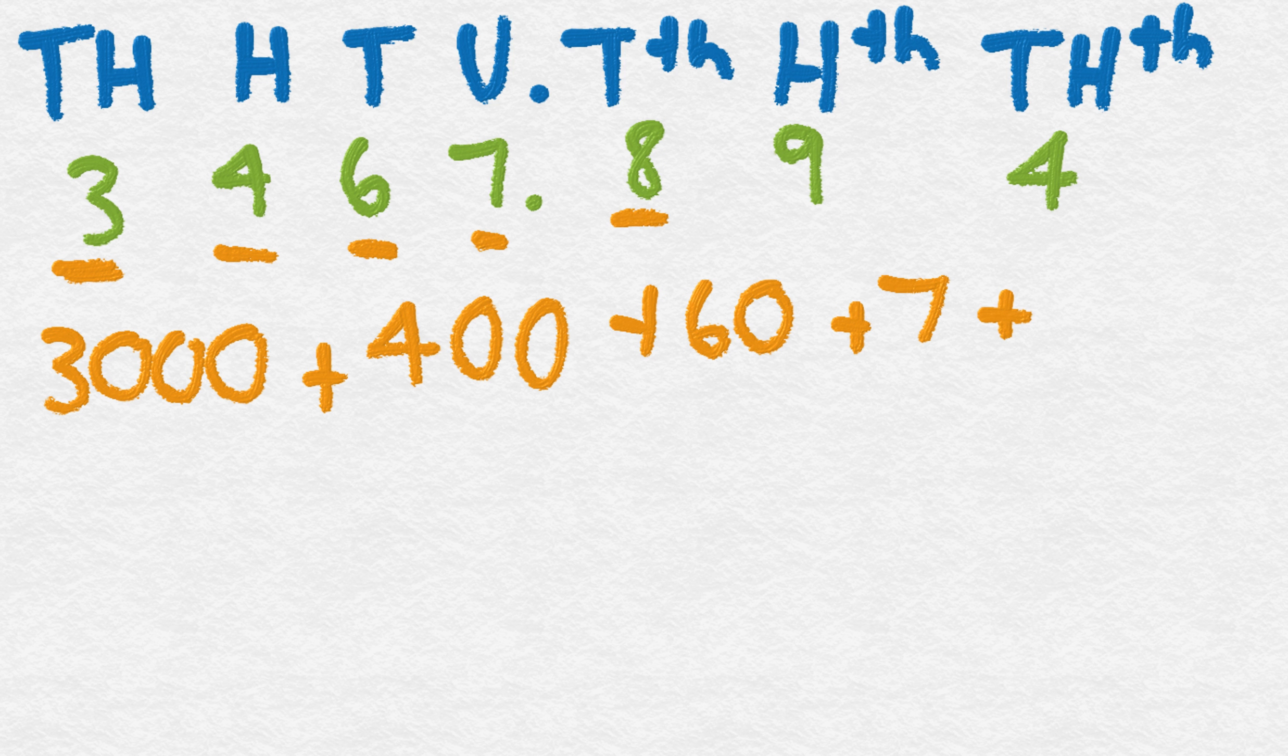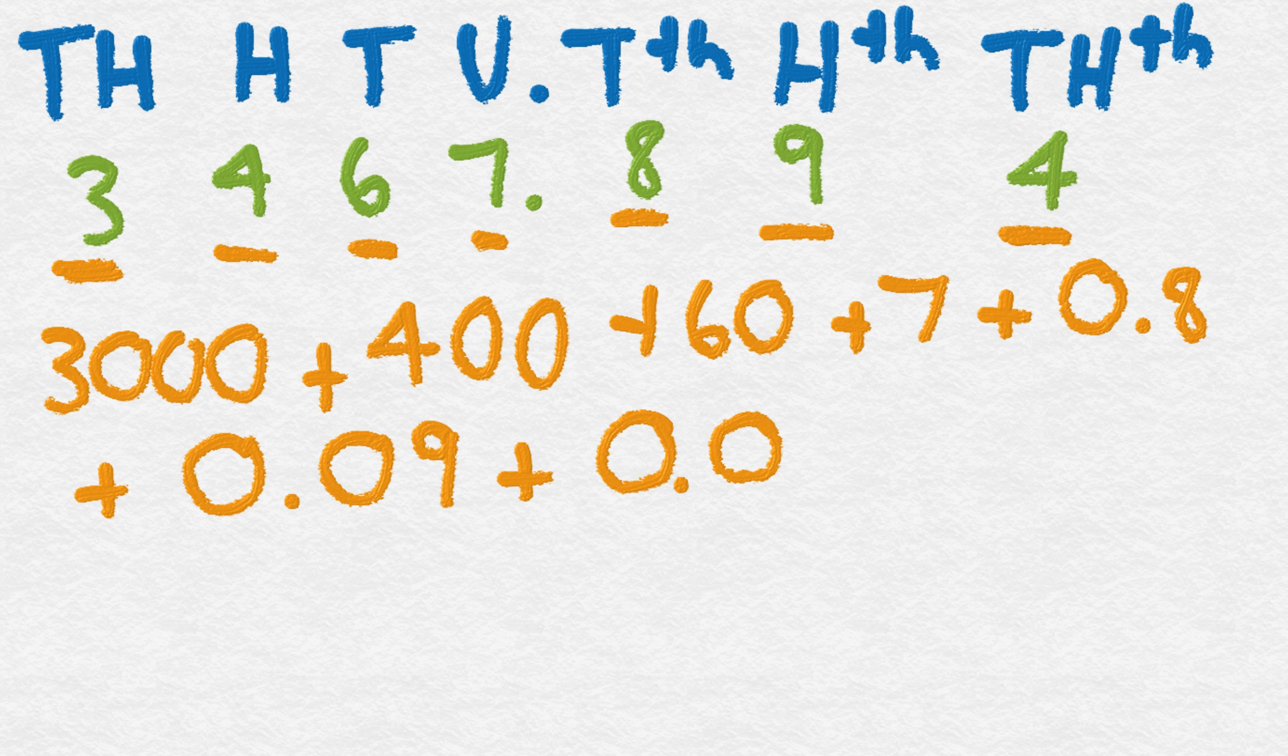Plus 8 tenths. So we've got no wholes, 0.8, plus 9 hundredths, no wholes, no tenths, 9 hundredths, plus 4 thousandths. So you've got no wholes, no tens, no hundreds, but 4 thousandths. There we go. Thank you. I'll see you next time.